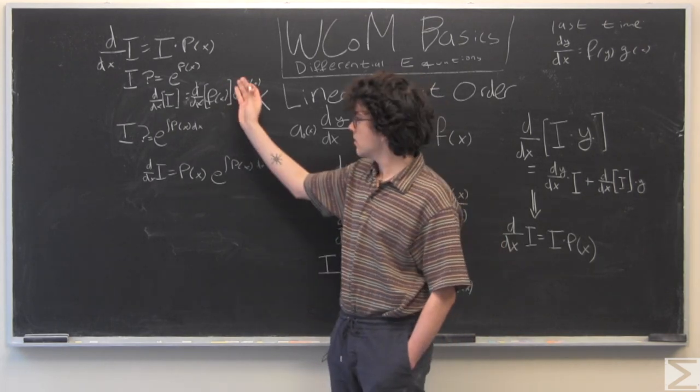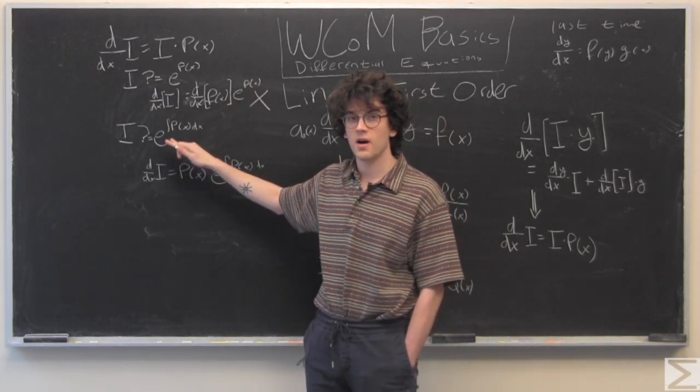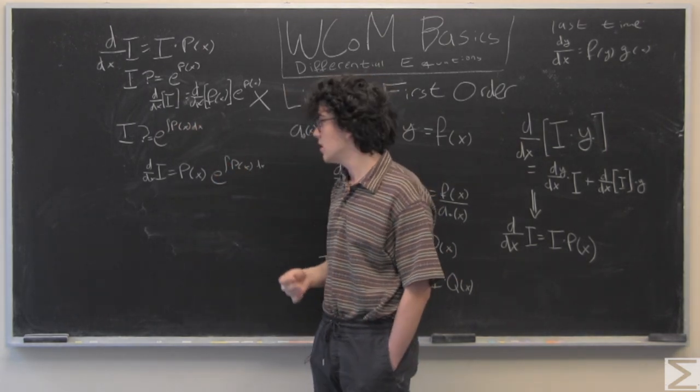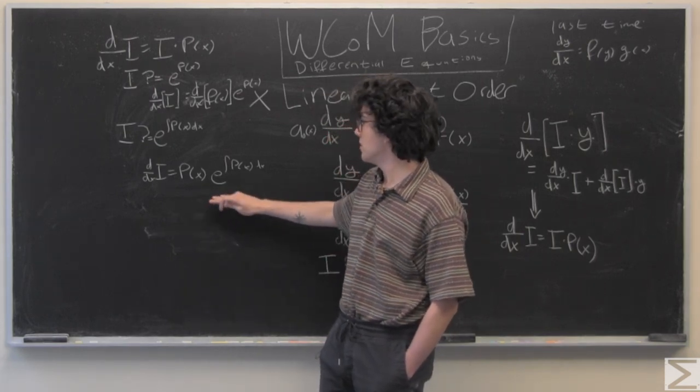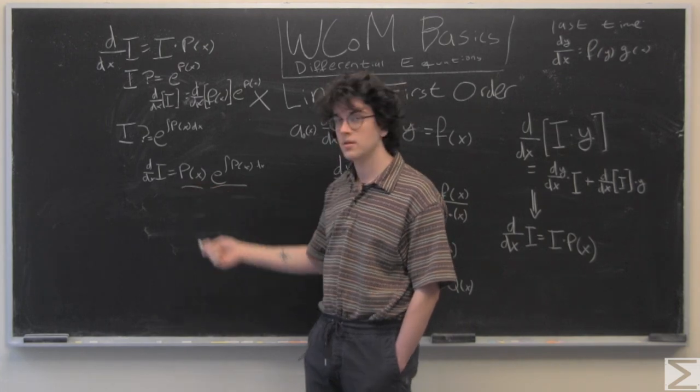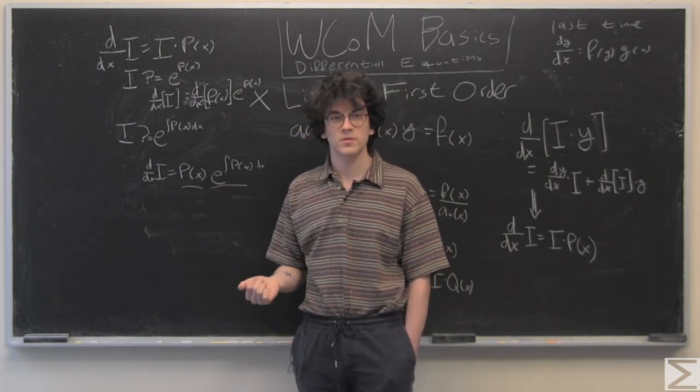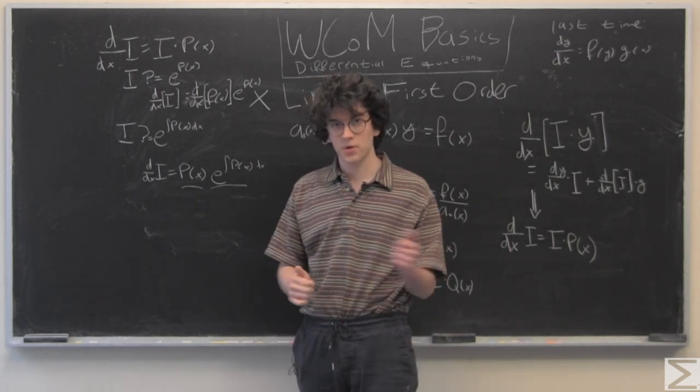So, this didn't work, so we want to see if e to the integral of px with respect to x could work. And, indeed, that does work, because this is our i and this is our p, so we have the derivative of i with respect to x is equal to i times p, which is perfect.